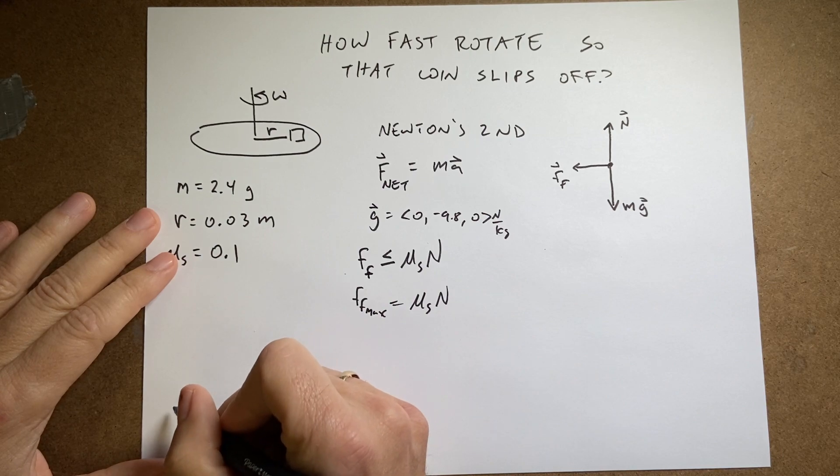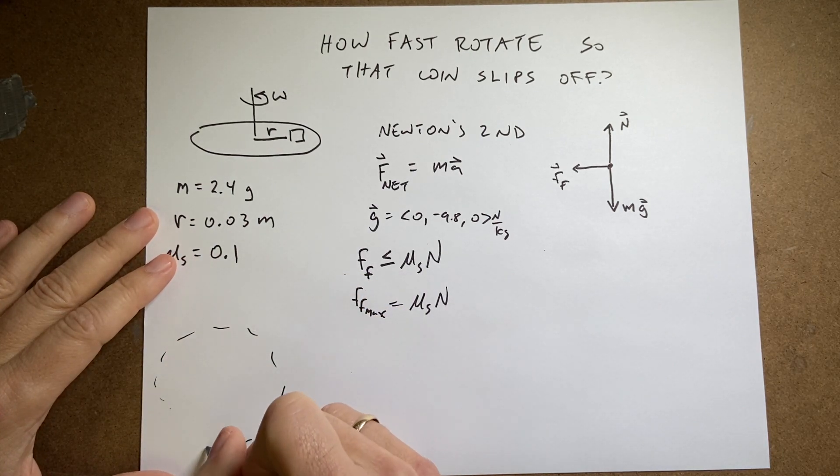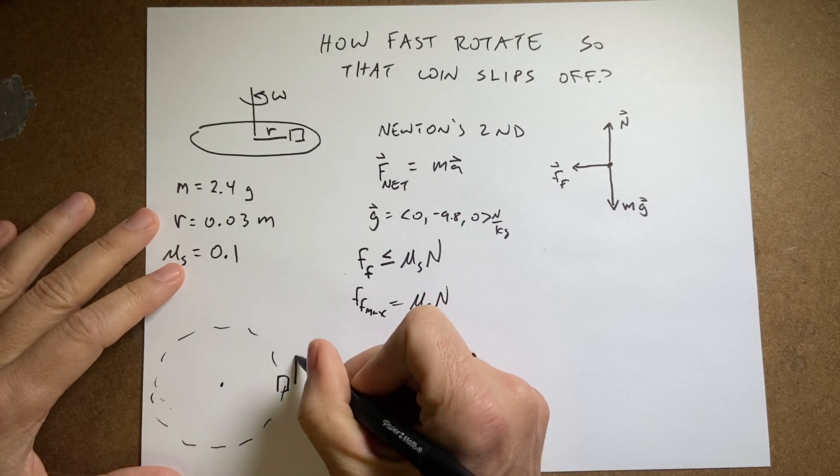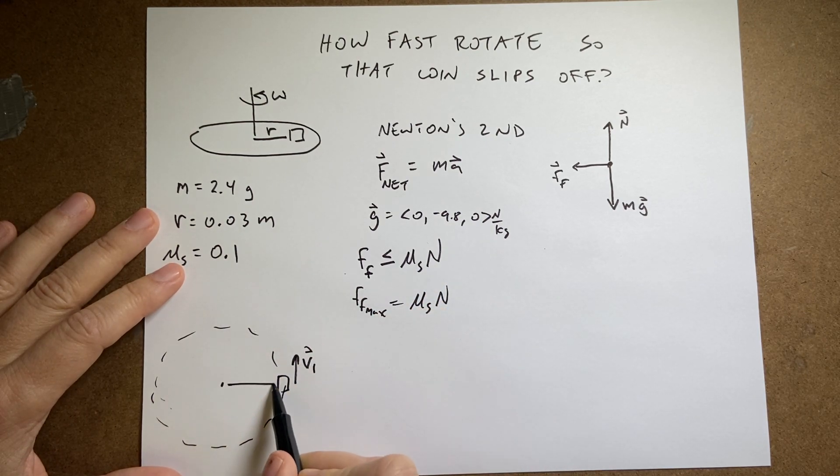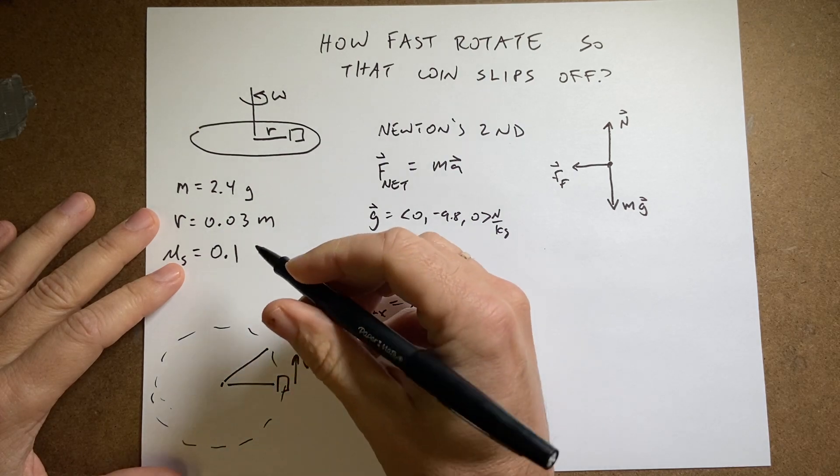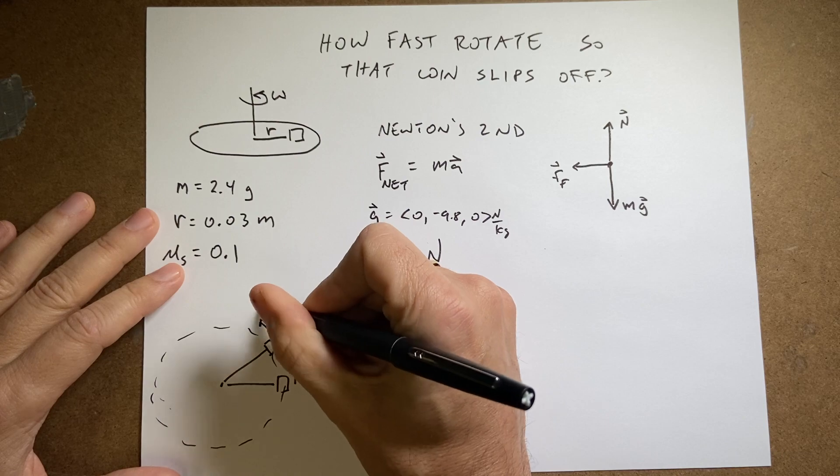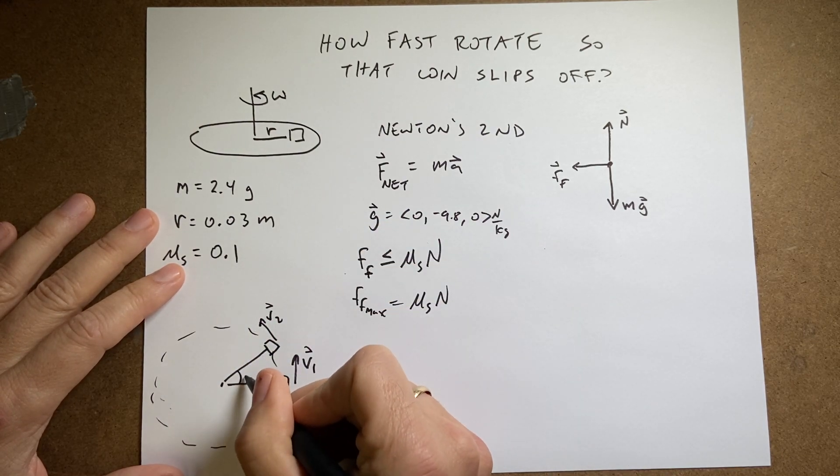So let's imagine this. Here's an object. Here's looking at it from the top. Here's V1 at some instant. And then a little bit later it's right here with the same magnitude velocity but in a different direction, V2.